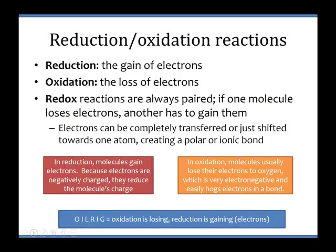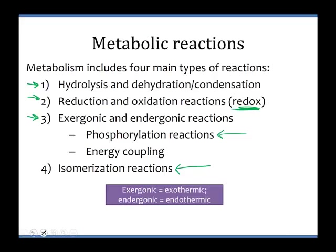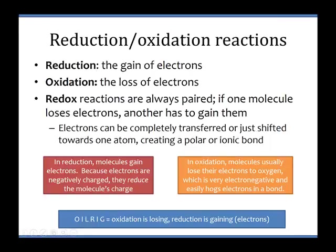Let's look at our second reaction type: reduction and oxidation reactions. In chemistry, a reduction reaction is where you gain electrons — a molecule that is reduced is gaining electrons. If you're adding electrons to a molecule, why are you 'reducing'? Because electrons are negatively charged, they reduce the molecule's charge. So when you add electrons to a molecule, you're reducing the charge of the molecule — hence, a reduction reaction.